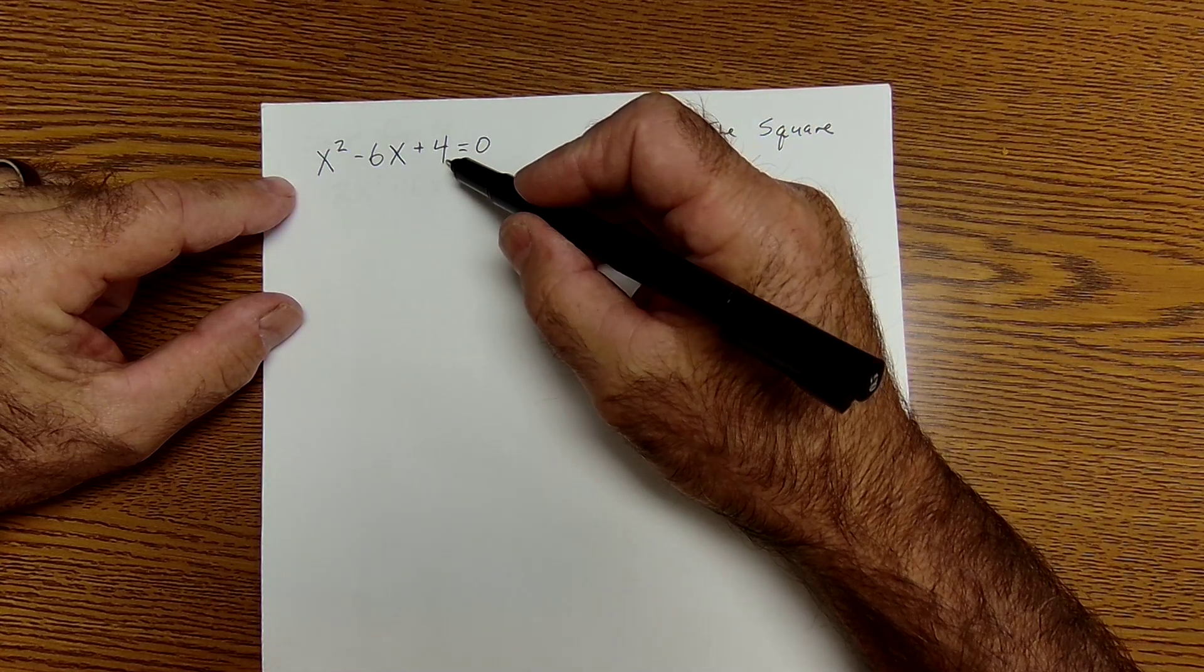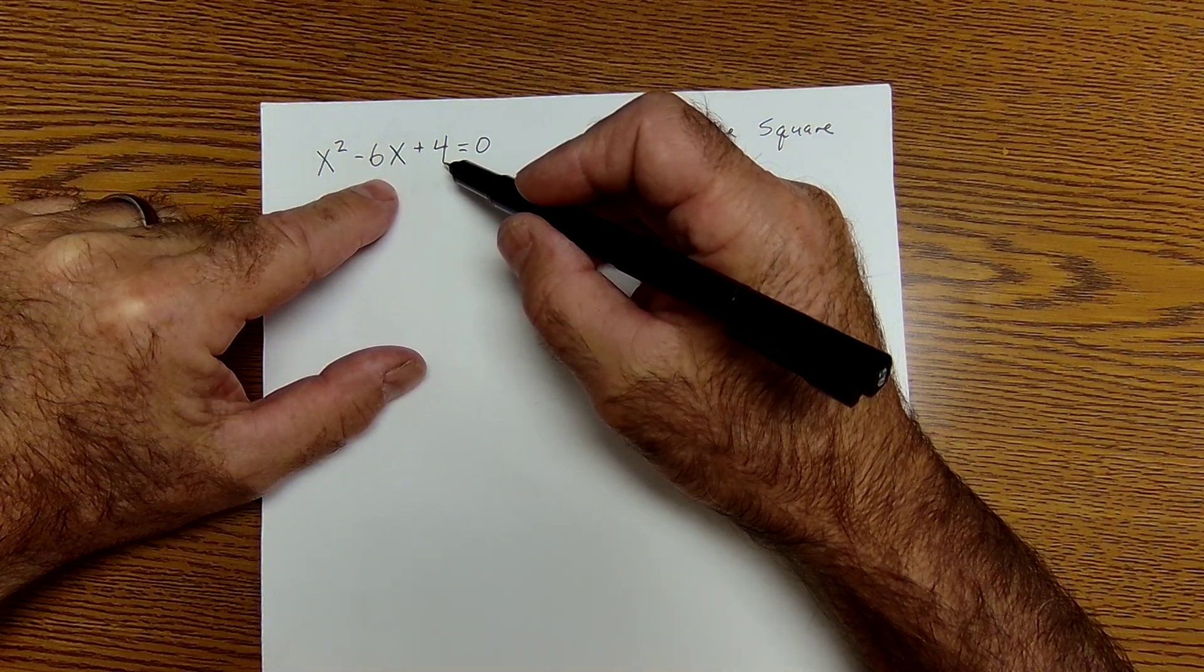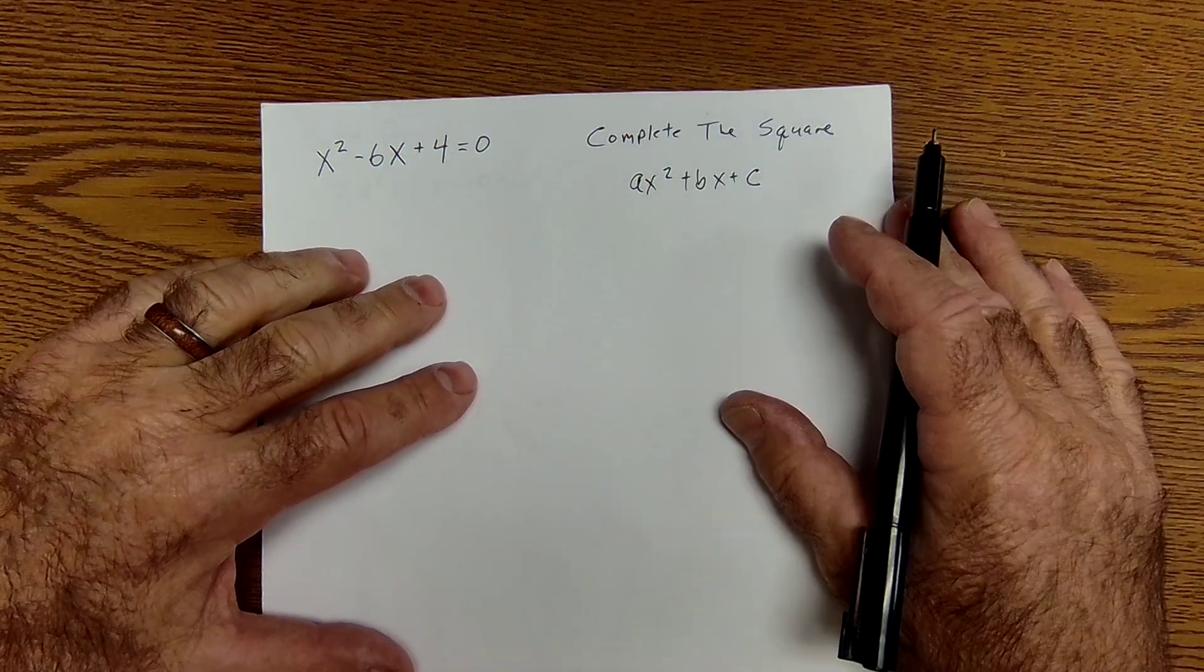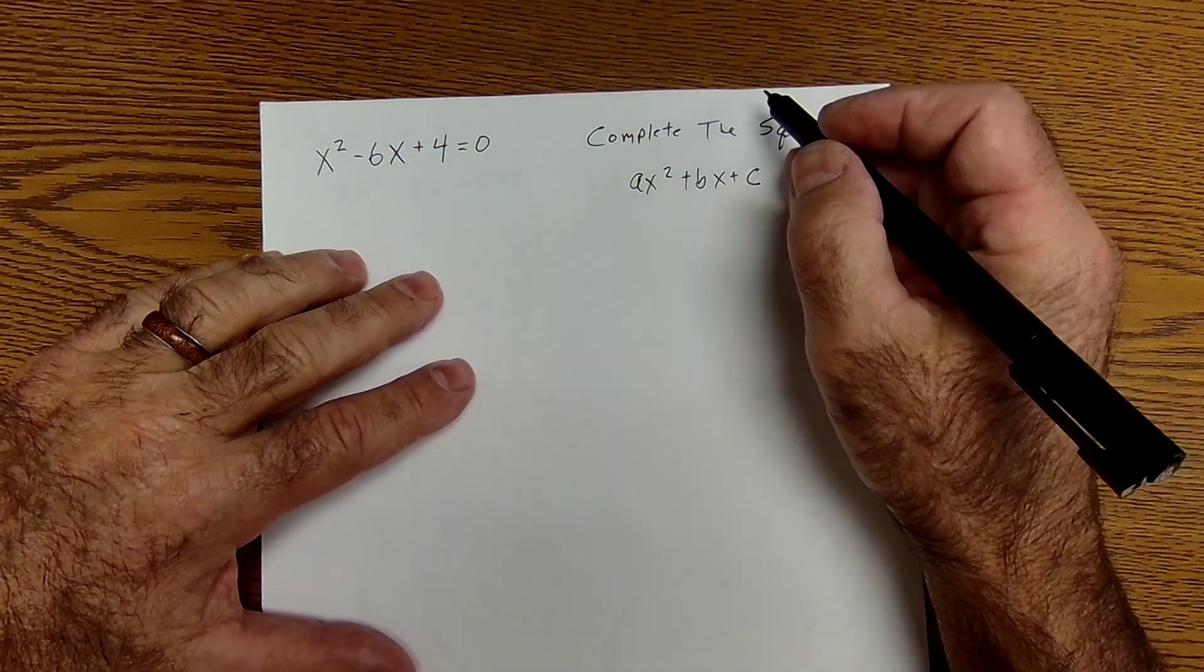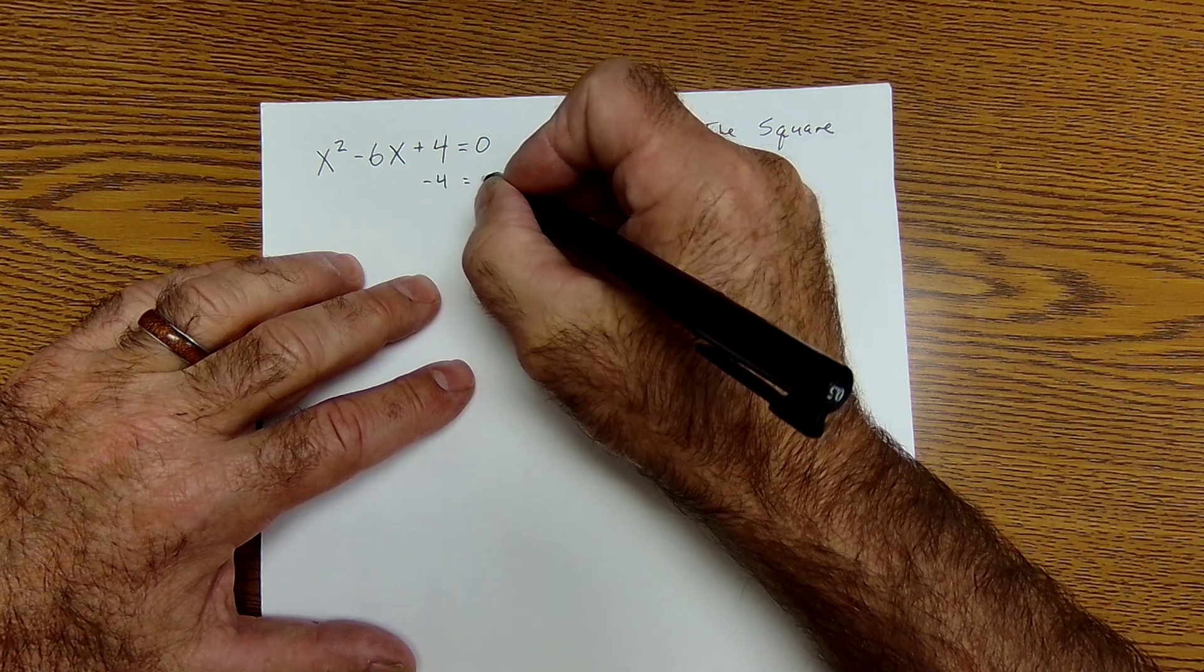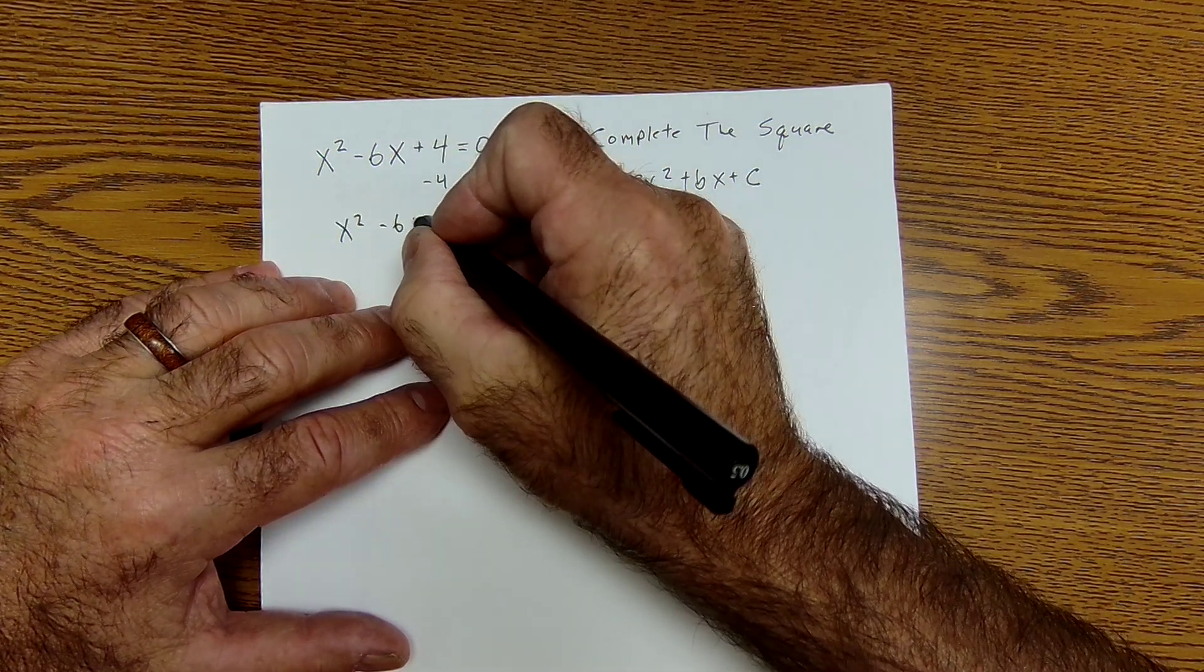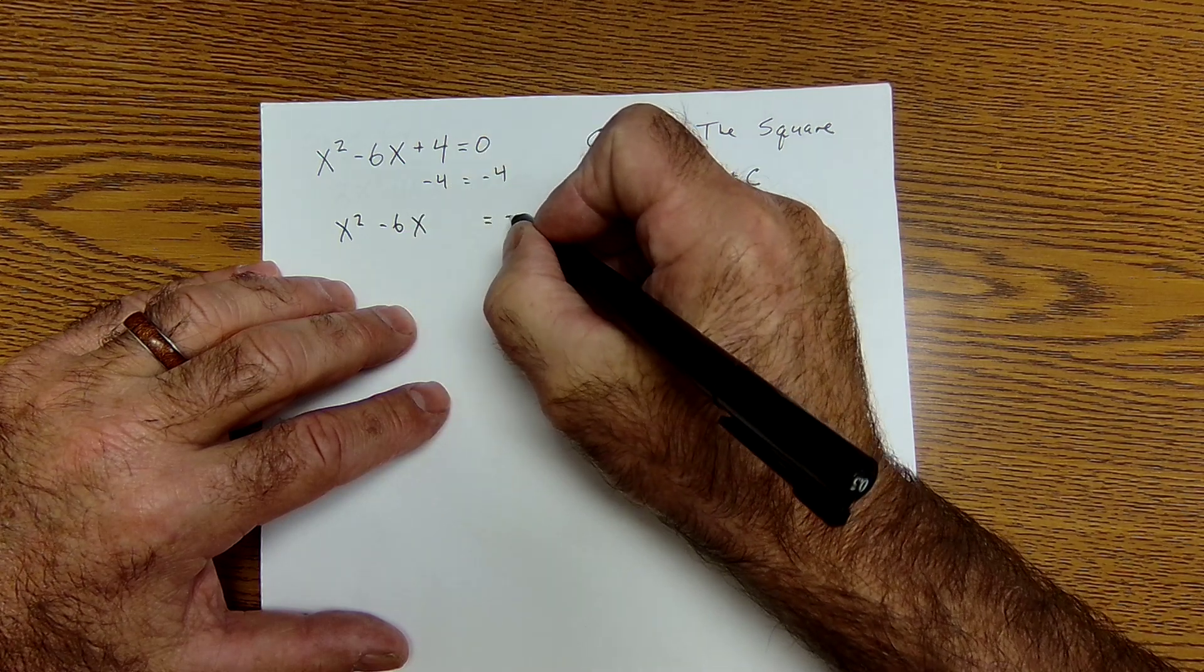The factors of 4 that get you 6, there's no way to do that. So the next step is to complete the square. Subtract 4 from both sides. That gives me X squared minus 6X equals negative 4.